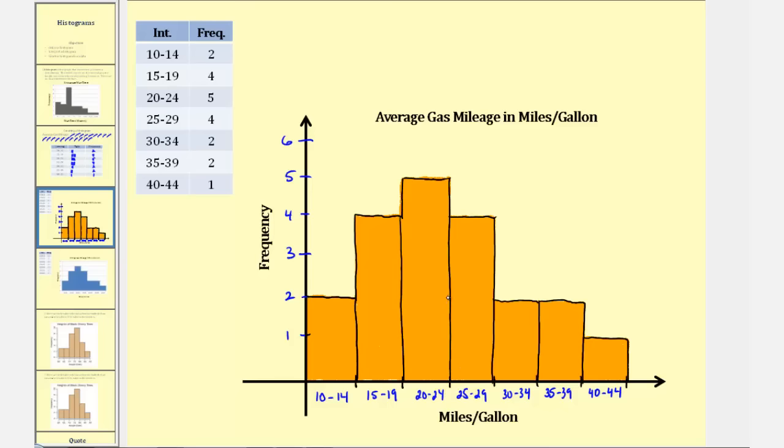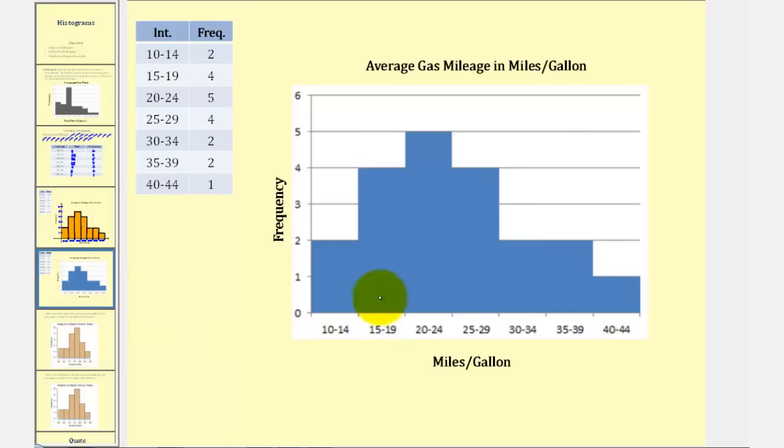And once again we can see that the mode would be the interval from twenty to twenty-four for this data of average gas mileage in miles per gallon. And I went ahead and created the same histogram using some software with the same results. This histogram was made with Excel.